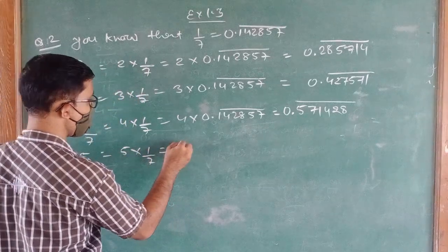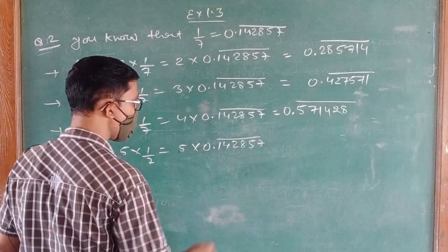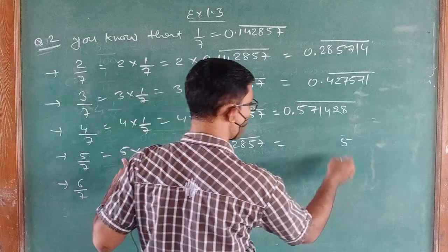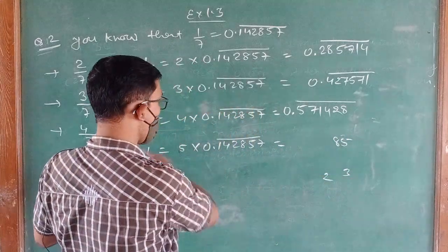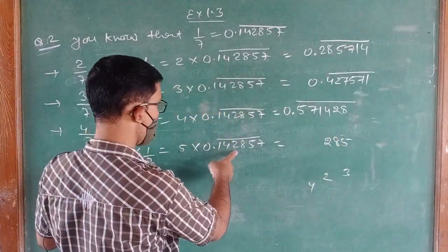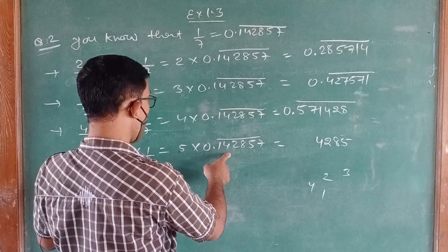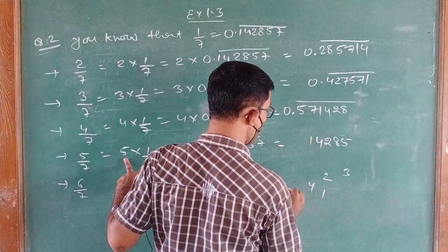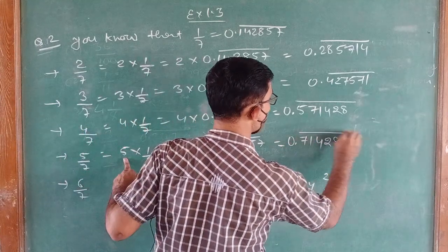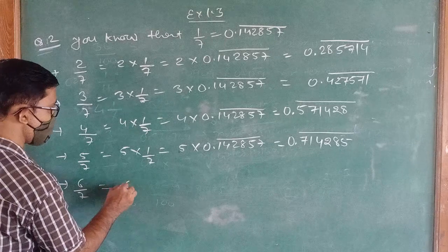For 4 upon 7: 4 × 0.142857. Four sevens are 28 carry 2, four fives are 20 and 2 = 22 carry 2, four eights are 32 and 2 = 34 carry 3, four twos are 8 and 3 = 11 carry 1, four fours are 16 and 1 = 17 carry 1, four ones are 4 and 5 = 9 — so 4 upon 7 = 0.571428.